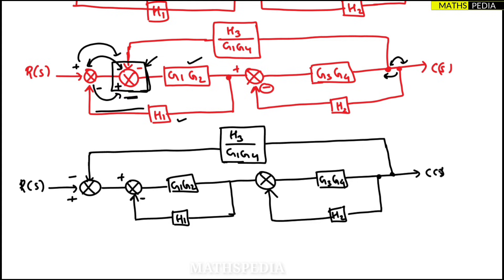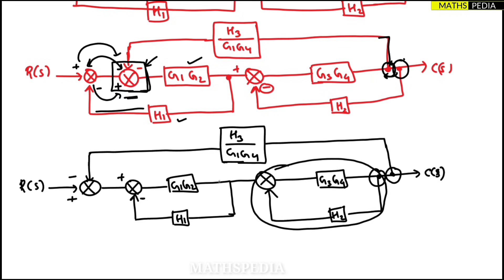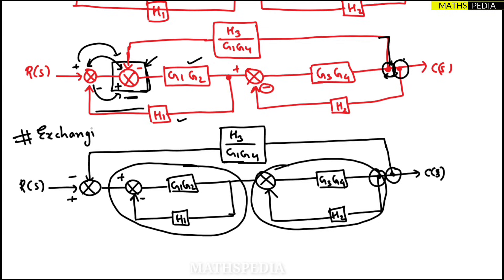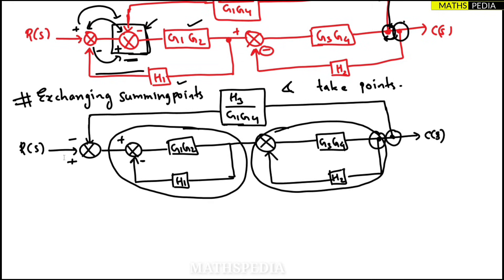To clarify what was done: the line that was coming first is now kept second, and the takeoff point that was coming second is now first, because this needs to form a minor loop. The same exchange was done for the summing points. Important concept: exchanging summing points as well as takeoff points is done in order to form minor loops. Be careful with the signs — along with a summing point, that entire line comes along.